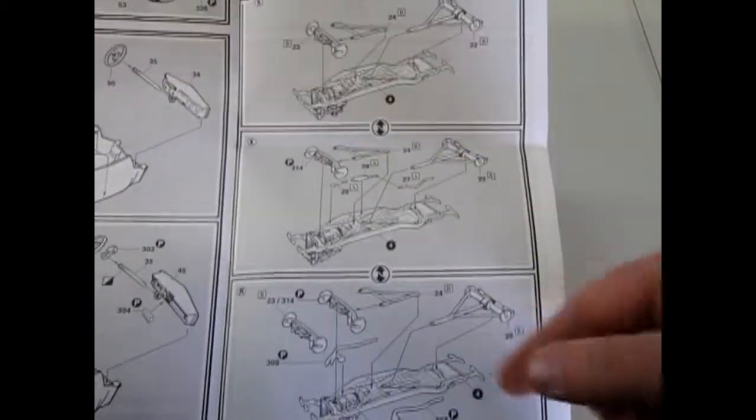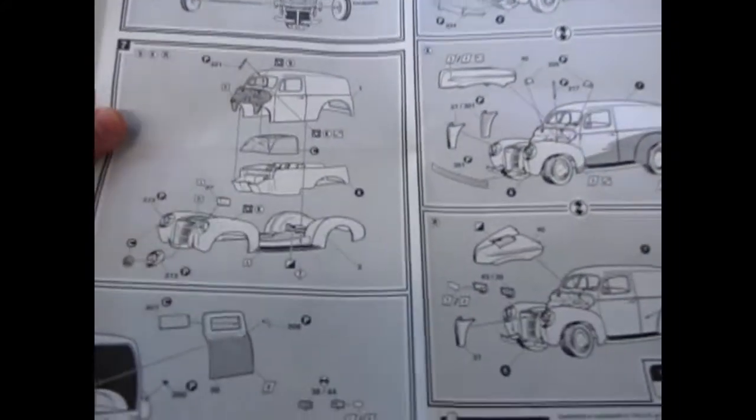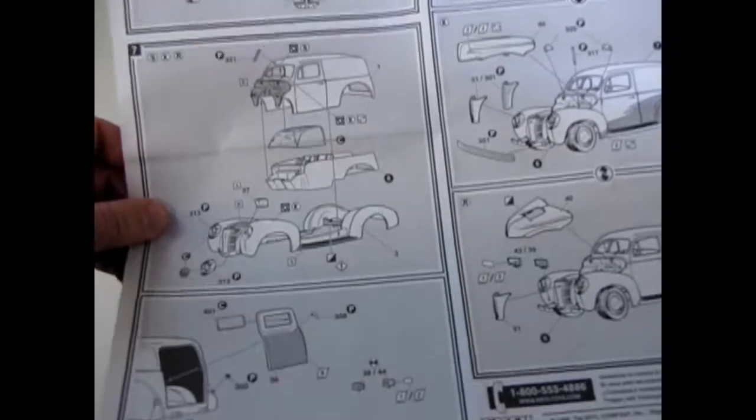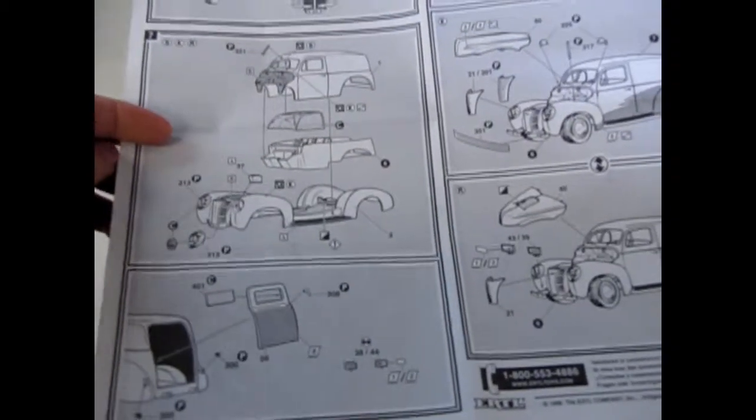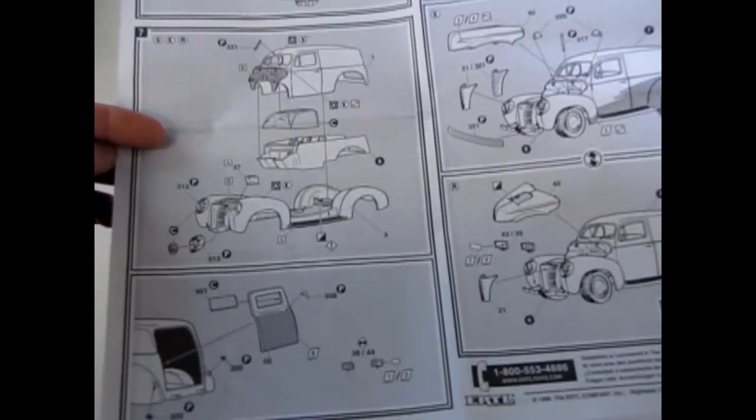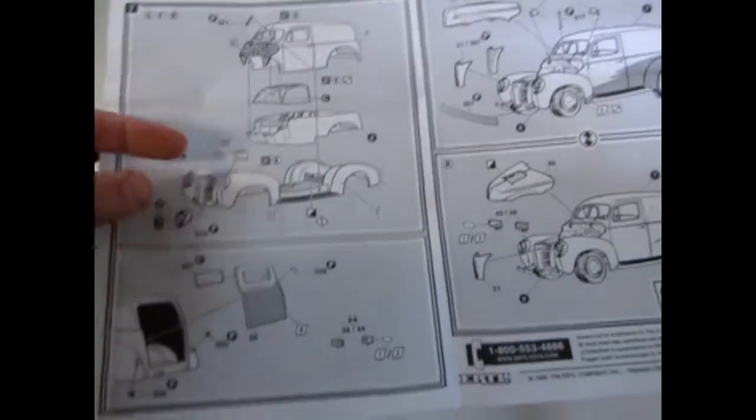This part is the same. Keep in mind that our engine is universal for those because, again, this is a Trophy Series kit. So you can replace the Buick nailhead with a Pontiac motor or something from one of the other 32, 36, and 40 Ford kits, 39 Ford as well.